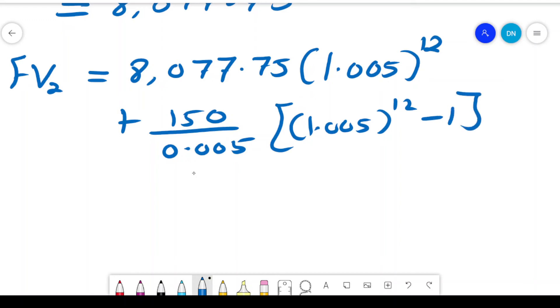And if you do that computation, this will give us a total of $10,426.30. So this is the amount of money that Anne accumulated in the account.